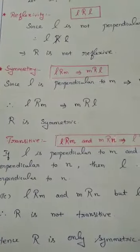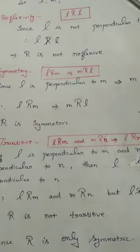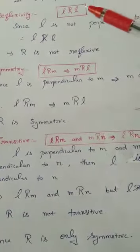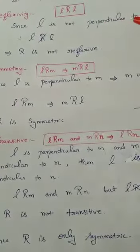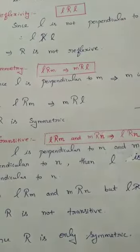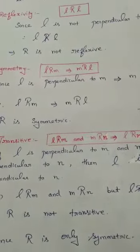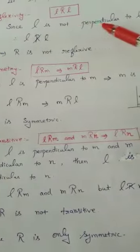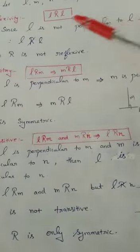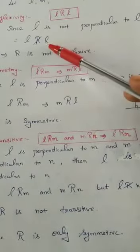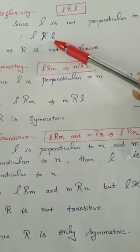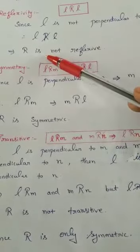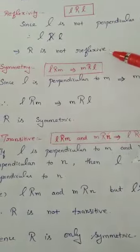First, reflexivity. The definition is L related to L. Since any line cannot be perpendicular to itself — considering line L, L is not perpendicular to L itself — L is not related to L. This implies the relation R is not reflexive.